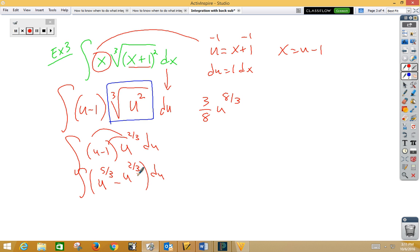And then here we're going to add 1 again, so that's going to be 5 thirds. So minus 3 fifths u to the 5 thirds plus c. Not really u though, it's really x plus 1 to the 8 thirds minus 3 fifths x plus 1 to the 5 thirds plus c.